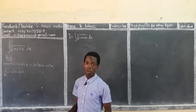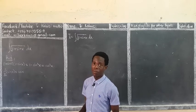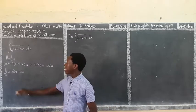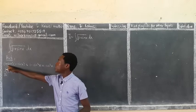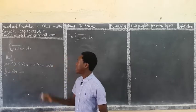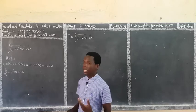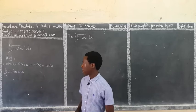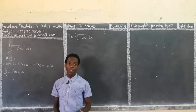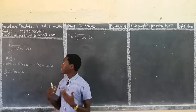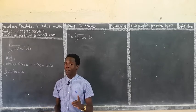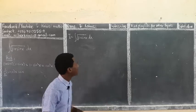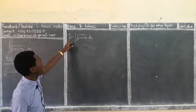What you need to know is that whenever you have two terms where the only difference is the sign, that's always a difference of two squares. Using the Pythagorean identity, we know that 1 minus sin²x equals cos²x. And we know that when you differentiate sin x you get cos x. This is integration, but we'll be combining parts of differentiation and trigonometry.